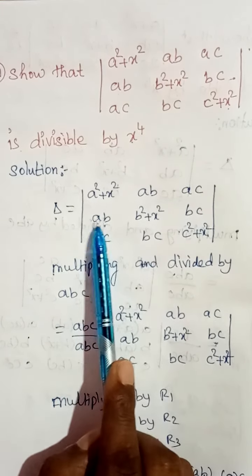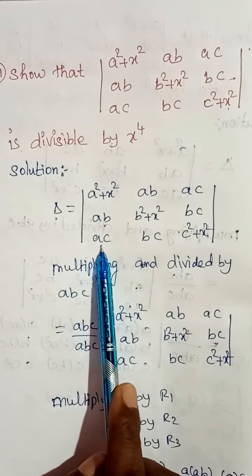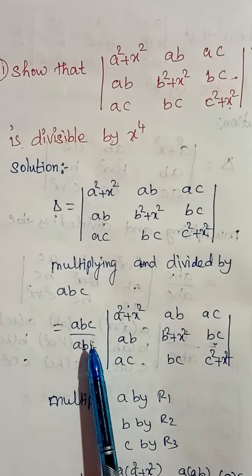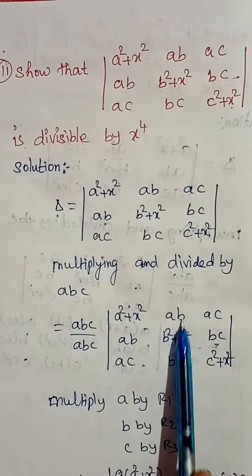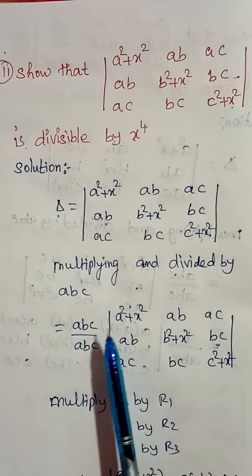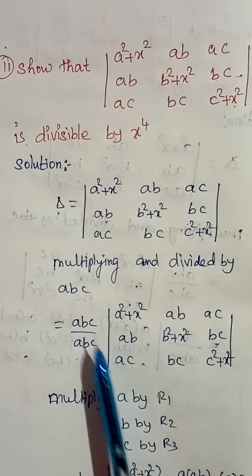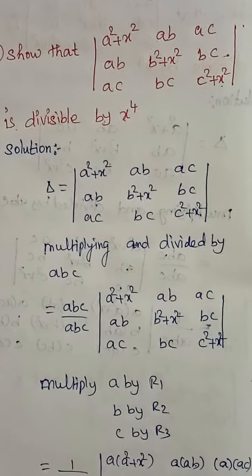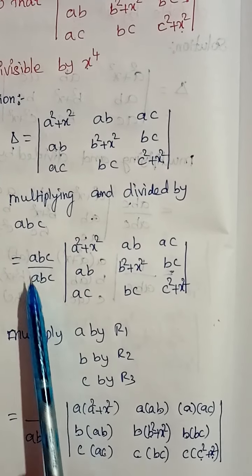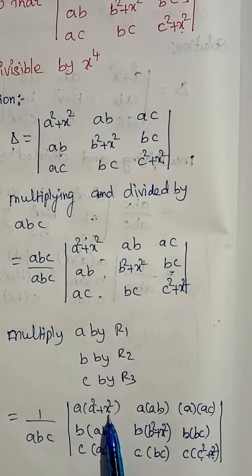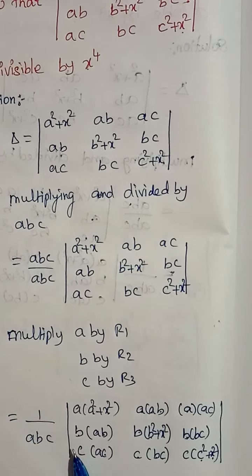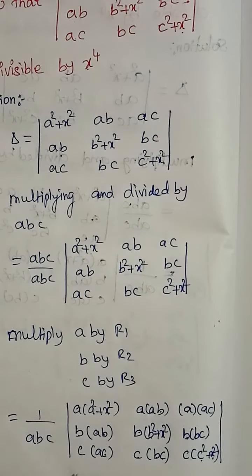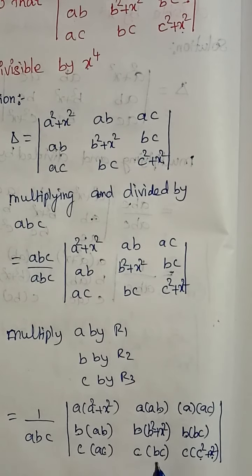So delta is equal to the determinant: a square plus x square, a b, a c; a b, b square plus x square, b c; a c, b c, c square plus x square. Now I am multiplying and dividing by a b c — multiplying row 1 by a, row 2 by b, and row 3 by c.